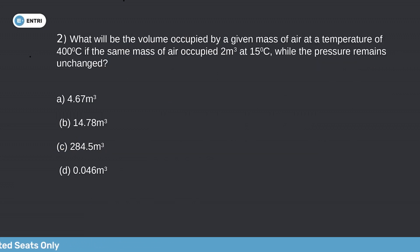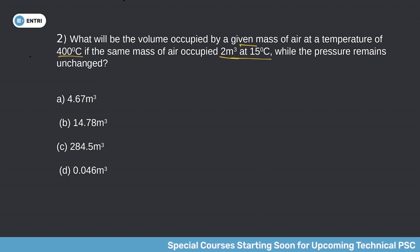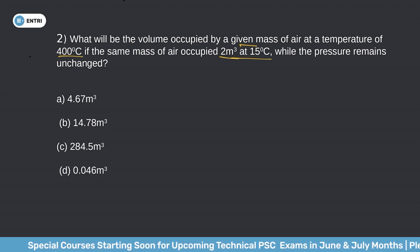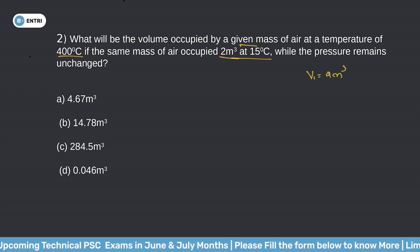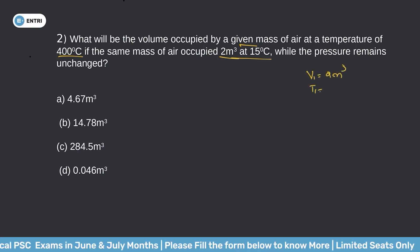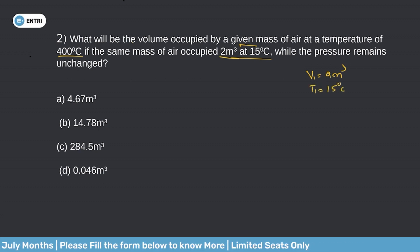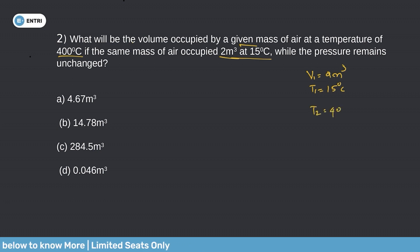Question 2: What will be the volume occupied by a given mass of air at a temperature of 400 degrees Celsius, if the same mass of air occupies 2 cubic metres at 15 degrees Celsius while the pressure remains unchanged? So we need to find the final volume at 400 degrees Celsius given the initial volume of 2 cubic metres at 15 degrees Celsius.